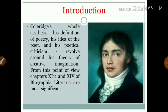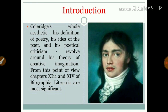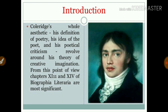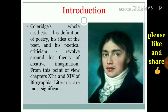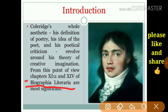First, Coleridge's whole aesthetic — his definition of poetry, his idea of the poet, and his poetical criticism. These three things revolve around his theory of creative imagination. From this point of view, chapters 11 to 14 of Biographia Literaria are the most important.